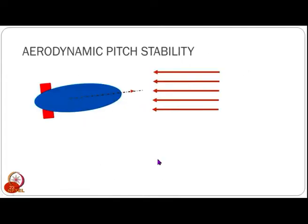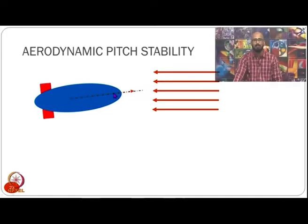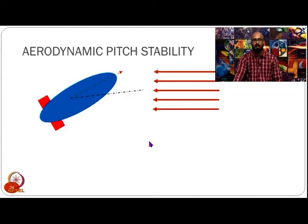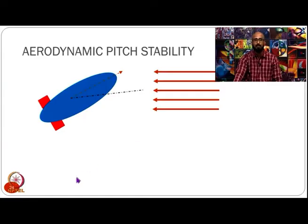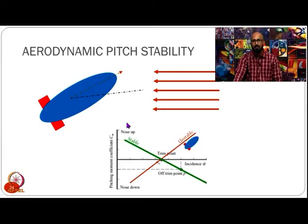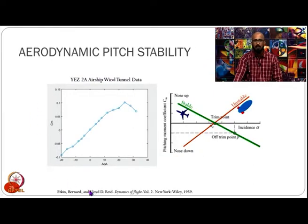Now let us see what happens in the case of airships. Let us say the airship has some non-zero pitching angle. What happens is that it actually moves away, meaning the pitching moment is actually increasing — it is a destabilizing moment that is being created, not a restoring moment. Pitching stability is positive in conventional civilian aircrafts, but in airships we cannot ensure that. So airships are unstable, while typically civilian aircrafts are stable.